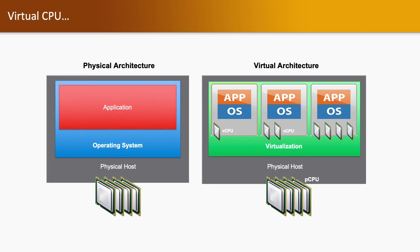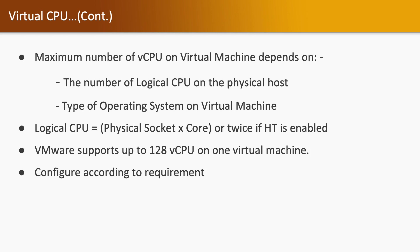Now we will look at how that sharing works. We have virtual CPU and physical CPU. In a physical architecture, the physical CPU is attached to a server, and the operating system installed on that server assumes that this particular resource is only for itself. But that is not the case in virtual architecture. The physical CPU is attached on the physical host, and using the virtualization layer it is allocated to virtual machines in the form of virtual CPUs. The same physical CPU is allocated to multiple virtual machines, which will further work as virtual servers. The maximum number of virtual CPUs on a virtual machine depends on the number of logical CPUs on the physical host.